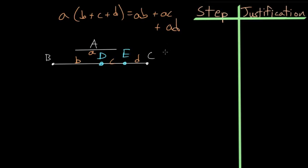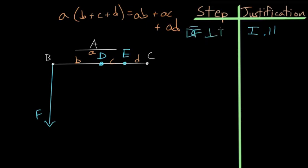Now let's get into the proof. We start by using Book I Proposition 11 to construct a line perpendicular to BC through the point B — we can call this line BF. Then, using Book I Proposition 3, we cut off a portion of BF equal to line A, and we call this point G, so BG equals A.